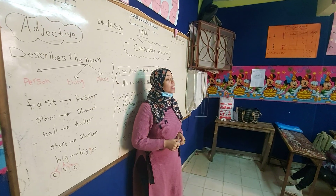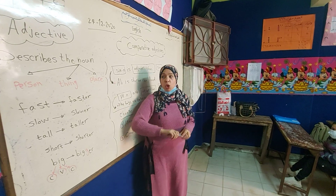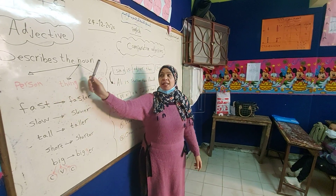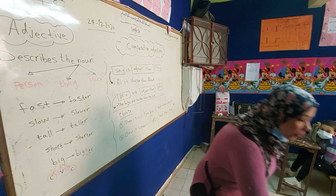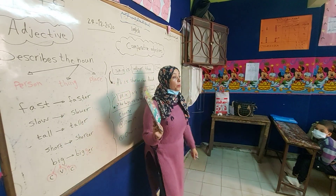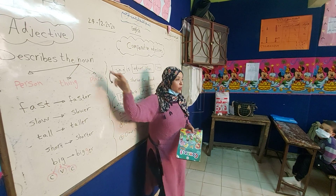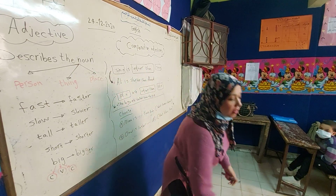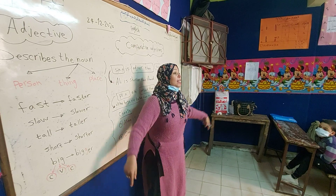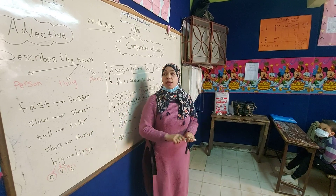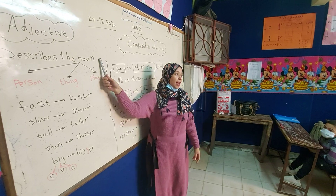If I say my name is Fatma, Fatma is a person — so Fatma is the noun. If I say I have a book, book is the thing — so the book is the noun. If I say we are at school, school is a place — so school is the noun.